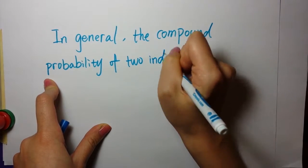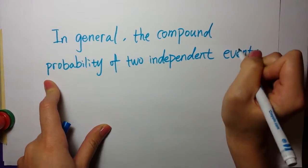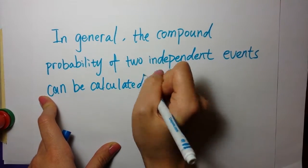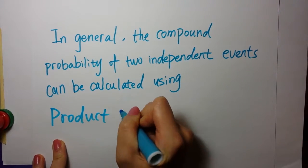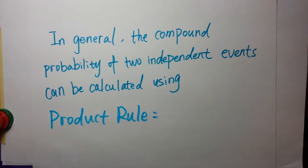In general, the compound probability of two independent events can be calculated using the product rule for independent events, which is P(A and B) equals P(A) times P(B), as we mentioned before.